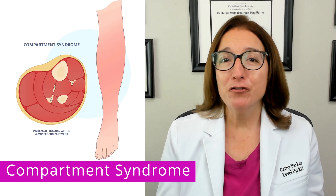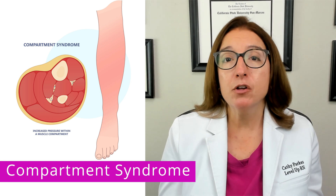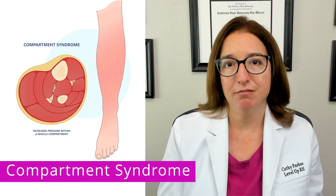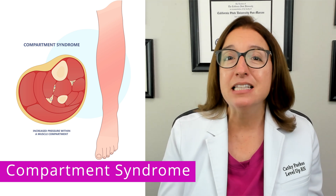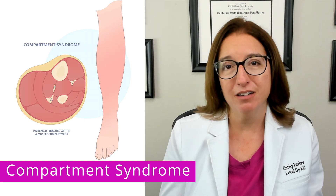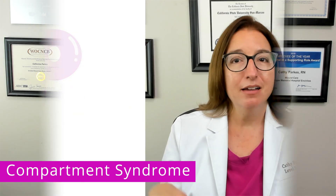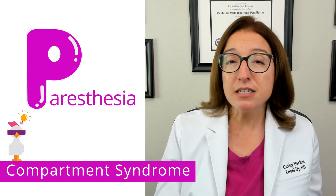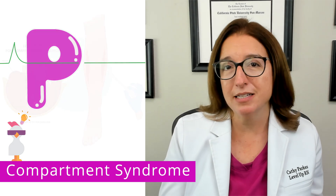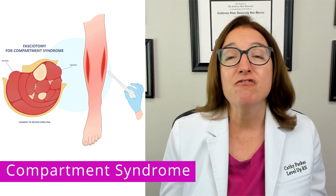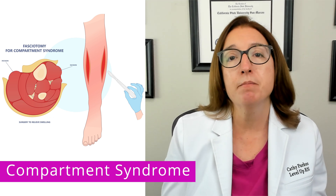We also need to monitor for a complication called compartment syndrome, where increased pressure within a muscle compartment of an extremity impairs circulation. Signs and symptoms include a hard and swollen muscle and intense pain unrelieved by medication. To remember the signs and symptoms, use the five Ps: intense pain, paresthesia (a pins and needles sensation), paralysis, pallor, and pulselessness. The treatment for compartment syndrome is a fasciotomy — a surgery where we cut into the fascia to relieve pressure within the muscle compartment.